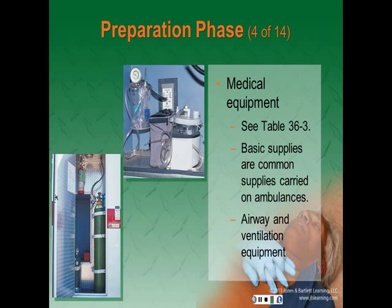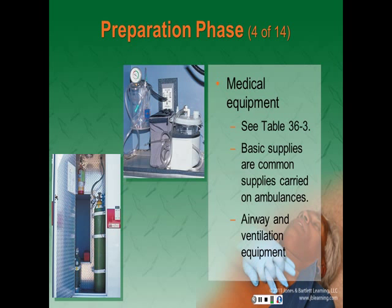Suction tubing must reach the patient's airway regardless of position, and all parts must be disposable or easily decontaminated. You should have one portable oxygen supply unit near a door or in the jump kit containing at least 500 liters of oxygen, equipped with a yoke, pressure gauge, flow meter, oxygen supply tubing, a non-rebreather, and nasal cannula. Have at least one extra portable 500-liter cylinder on the ambulance. The mounted oxygen unit should contain 3,000 liters of oxygen.